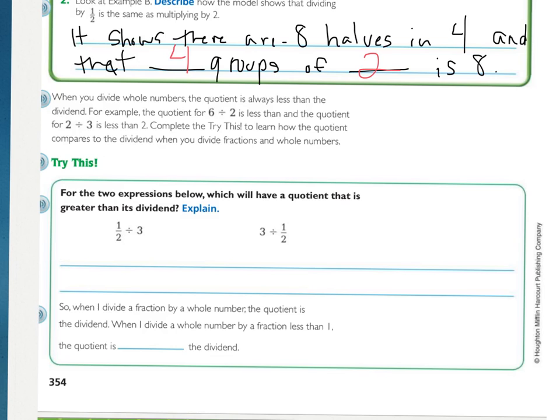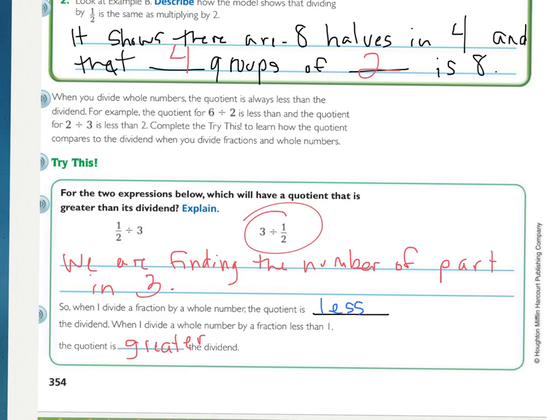So let's think about our try this. For these two expressions, which one will have a quotient that is greater than the dividend? So the answer, will it be greater than or less than our first number, the dividend? So 1/2 divided by 3, or 3 divided by 1/2. This is something that we've kind of talked about, so I want you to see if you can answer. Which one will have a quotient greater than the dividend? Press pause while you answer this. Alright, so the answer is 3 divided by 1/2, because we're finding the number of parts in 3.